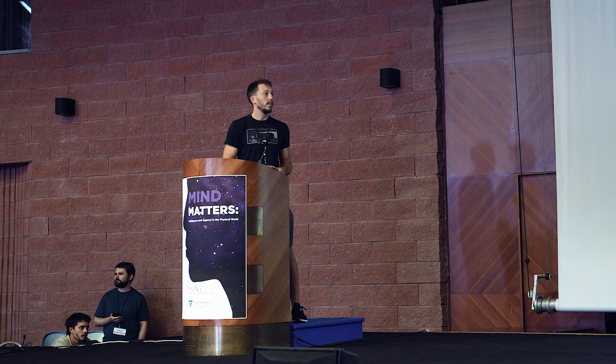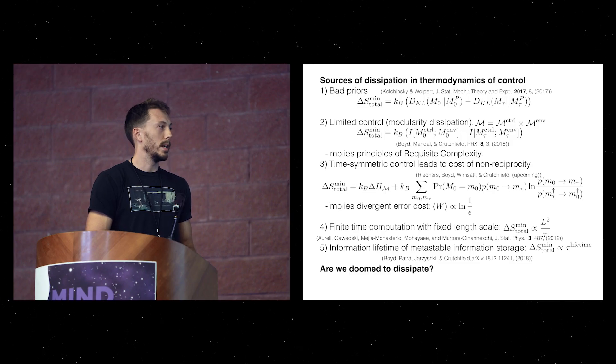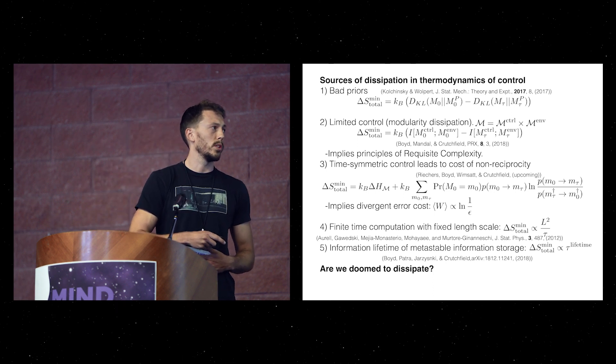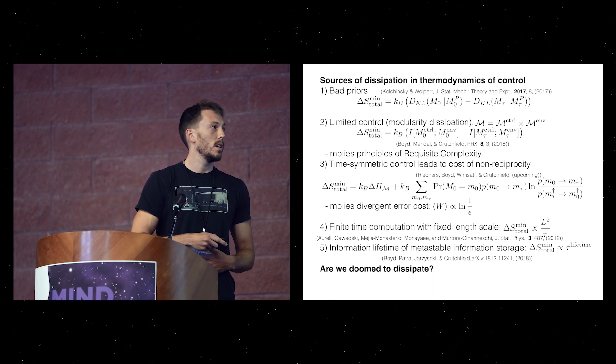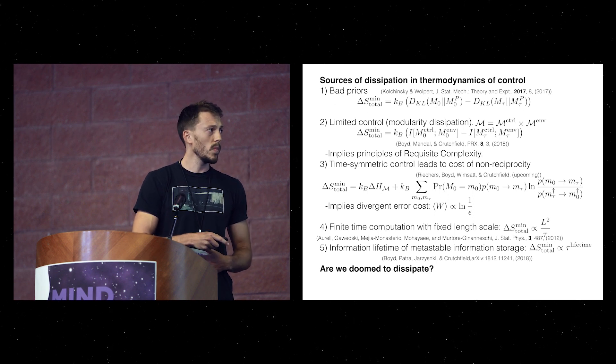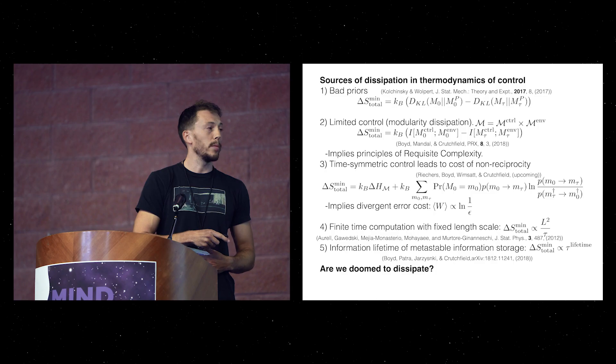And if you go to, say, counter-diabatic precise control of Langevin systems, you find that the minimum dissipation is proportional to the length scale of the system that you're controlling divided by the time you're allowed to control it over. So most computations happen in finite time, and that finite time puts a constraint on your dissipation.